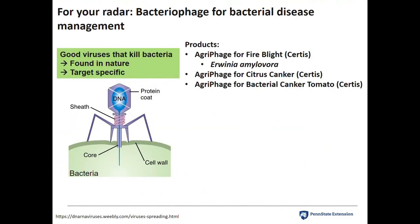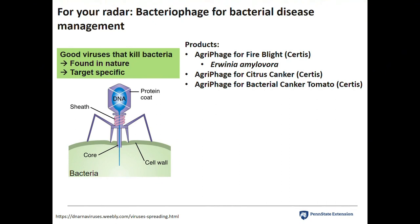For your radar as far as new products to control bacterial pathogens: bacteriophages. These are viruses that are specific for bacteria. Phages only attack bacteria, not fungi. They're found in nature and are target-specific — they look like little lunar modules. They land on the bacteria, inject their protein into the bacterial cell, and blow it up. They need a lot of bacteria present in order to make more of themselves, so there's a direct relationship between how much phage is present and the bacteria population. Products available right now are primarily through Certis — Agriphage for fire blight targeting Erwinia amylovora, Agriphage for citrus canker, and Agriphage for bacterial canker on tomato.